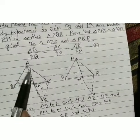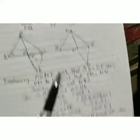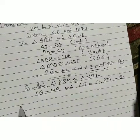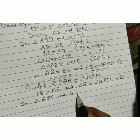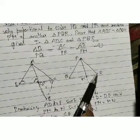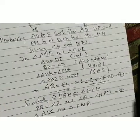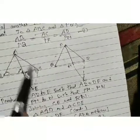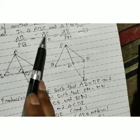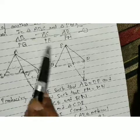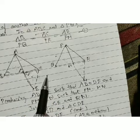Now in triangle AEC and PNR — using the proportionality of AC/PR, AE/PN, and EC/NR — by SSS similarity criteria, triangle AEC is similar to triangle PNR. This gives us angle 1 = angle 2.